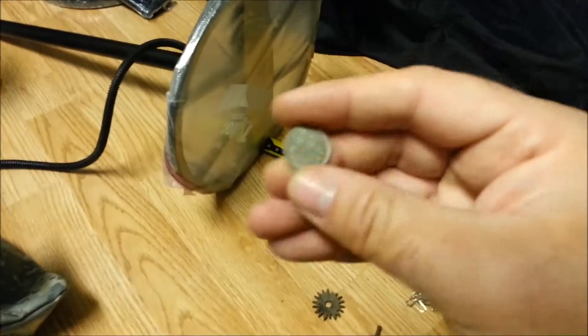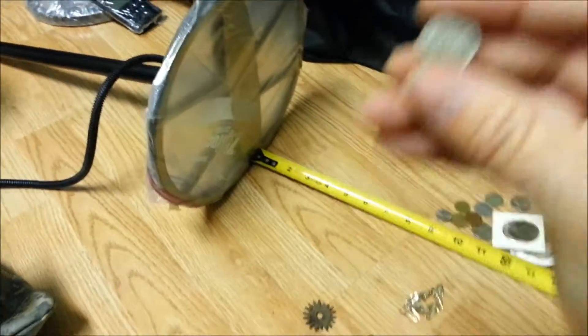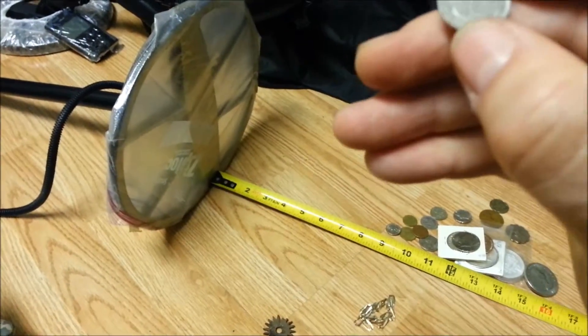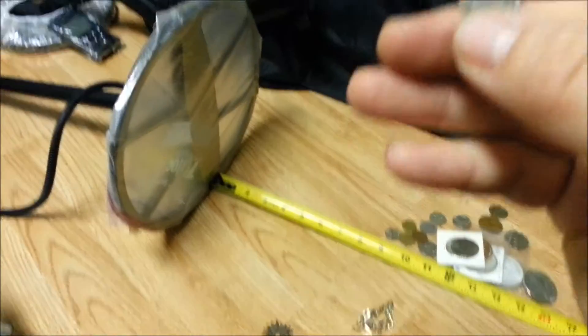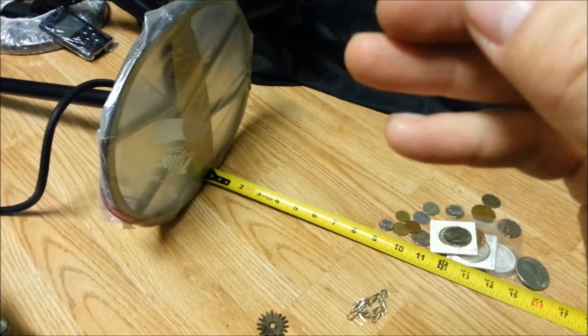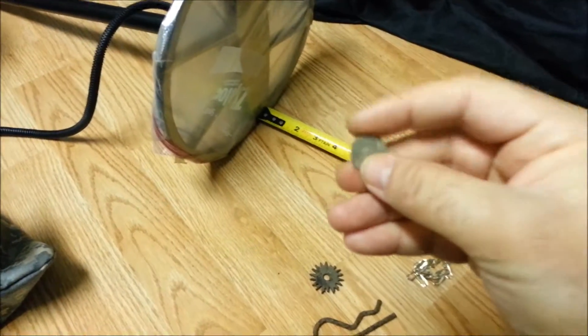And now this is the smallest coin. This is 5 Centavos, Republica de Guatemala. This is a very small coin.